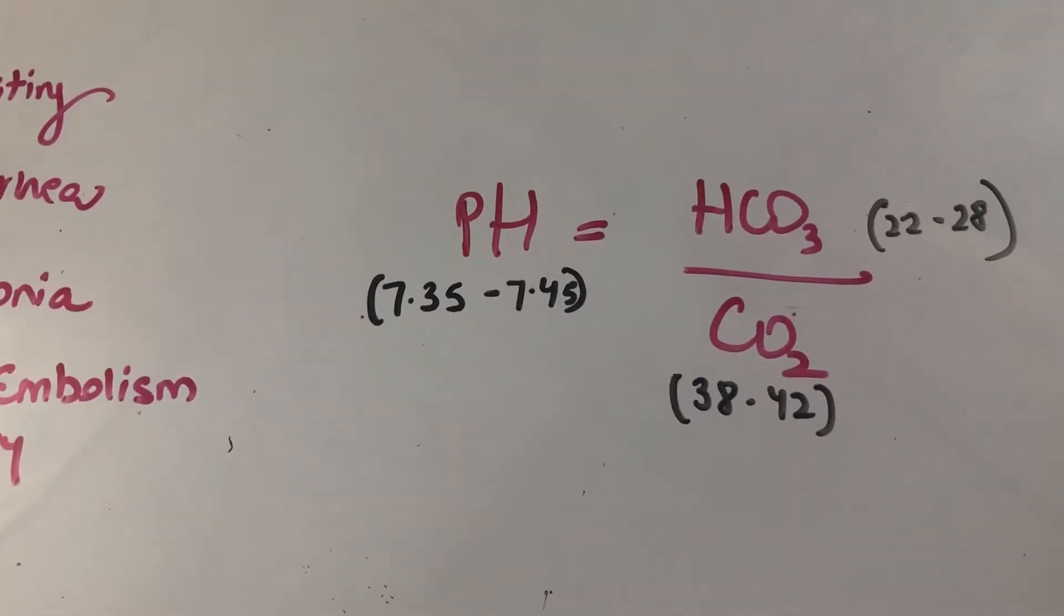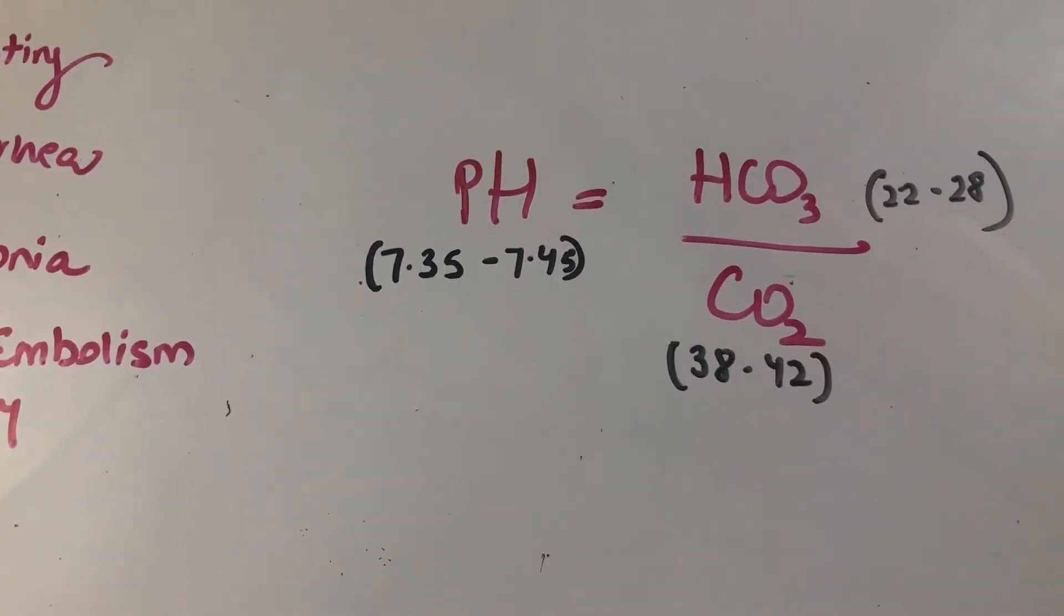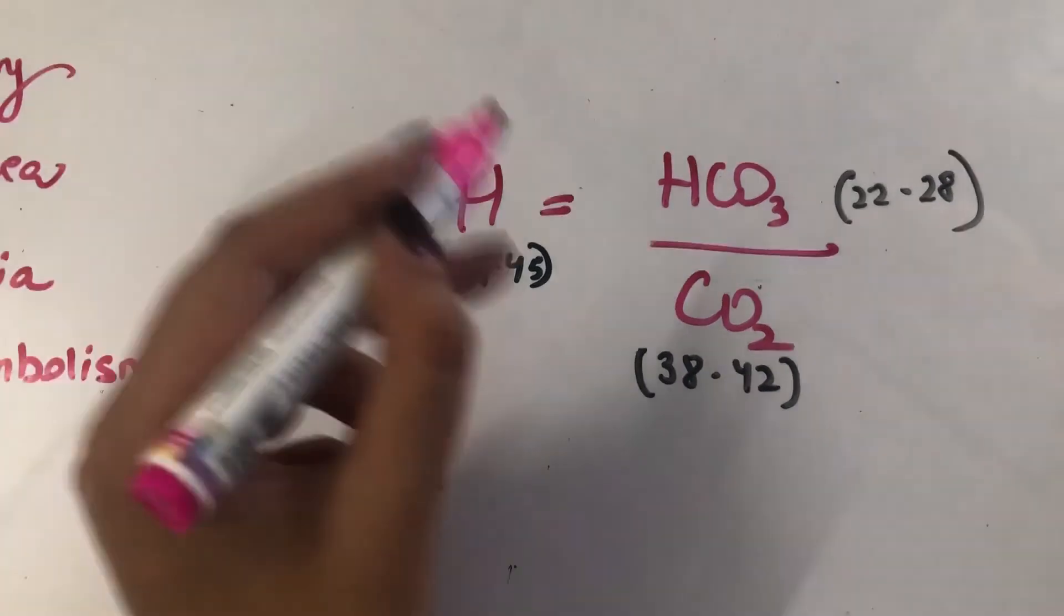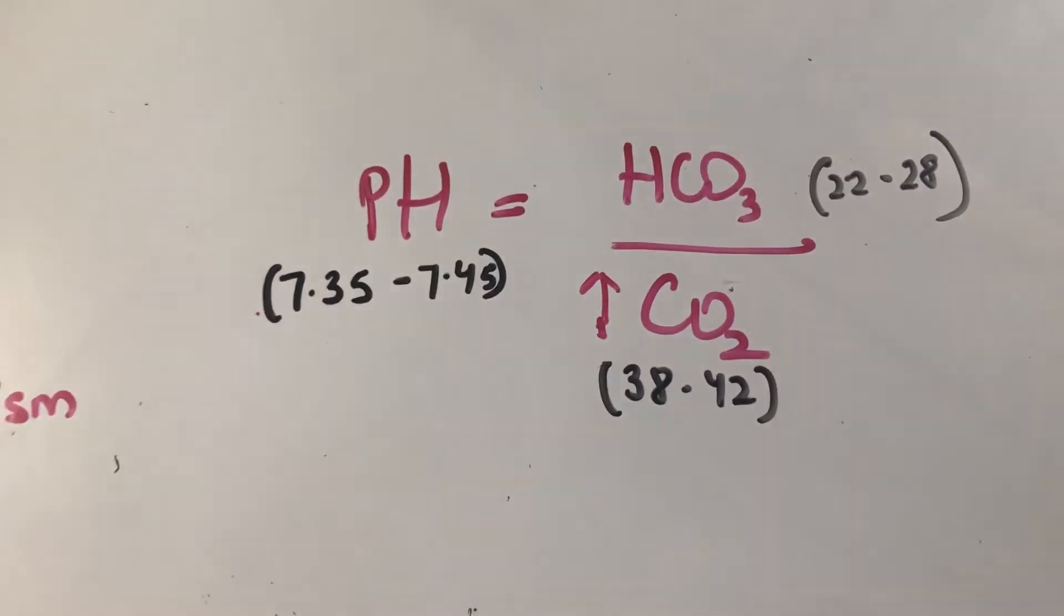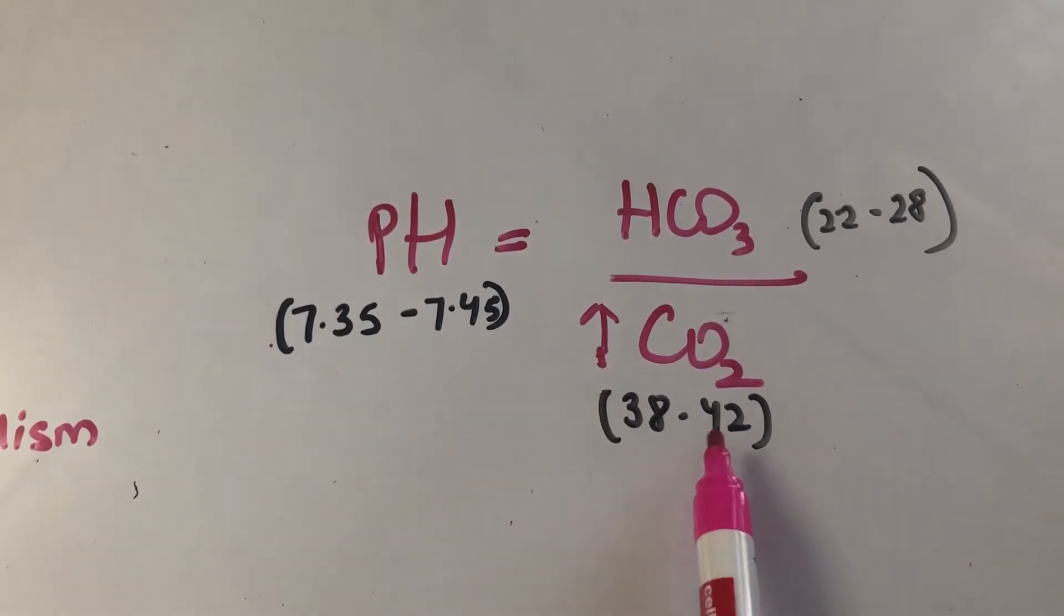So what happens in pneumonia? The lungs are infested by an infection, bacterial or viral, and they are unable to exhale out the carbon dioxide, right? So we will have a buildup of carbon dioxide in our arterial blood. Now, if the carbon dioxide levels increase, like they become 46, 47, the pH will come down, right?